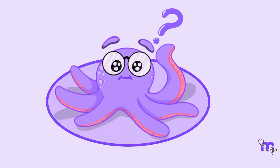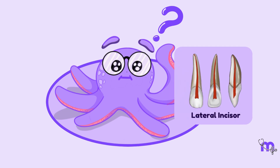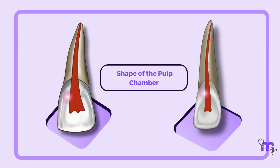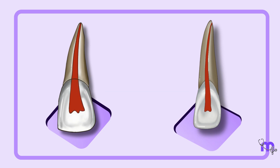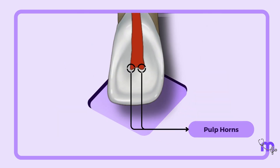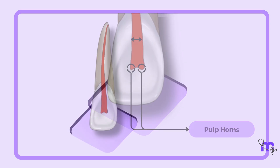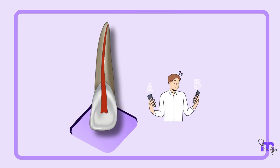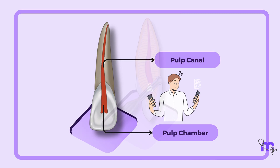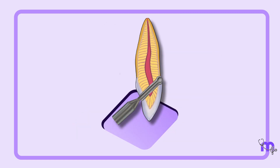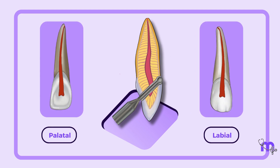Now let's look at how the axis cavity preparation of the maxillary lateral incisor differs from the central incisor. The shape of the pulp chamber is similar to the central incisor, but just smaller. Unlike centrals, the laterals only have two pulp horns. The pulp chamber is broad mesiodistally with no marked distinction between the chamber and the canals. The chances of perforation, both labial and palatal, in maxillary lateral incisors are quite the same.